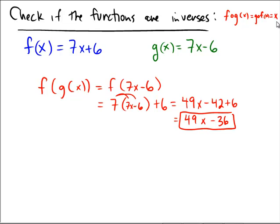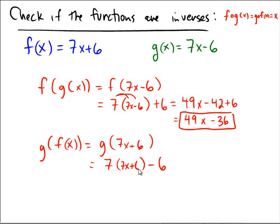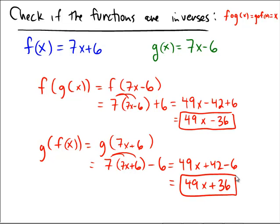For extra practice, let's still calculate what is g of f of x. G of f of x would have been g interpreted at the f of x, which was 7x plus 6. So this time you would have gotten the g, 7 times something minus 6, and the object being plugged in would have been 7x plus 6. Distributive property: 49x plus 42 minus 6, therefore 49x plus 36.